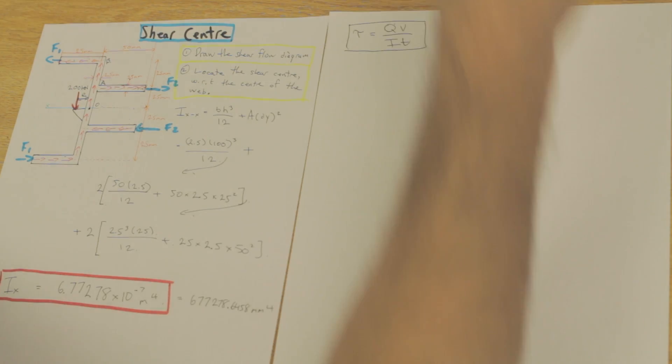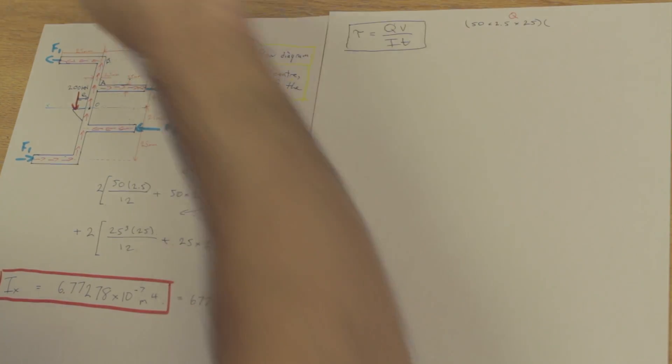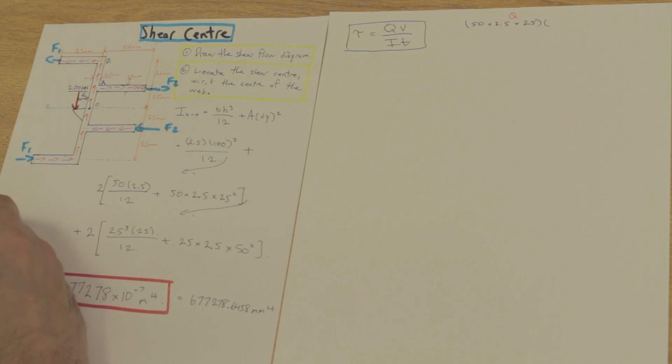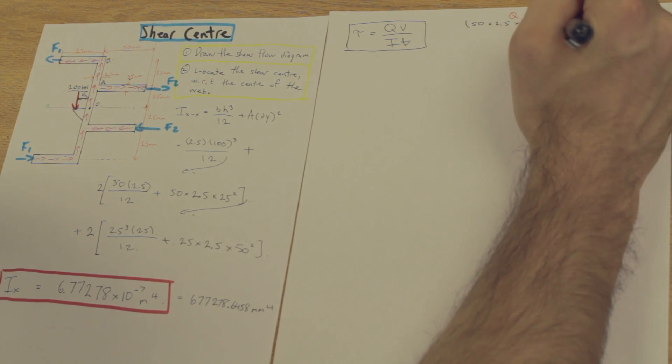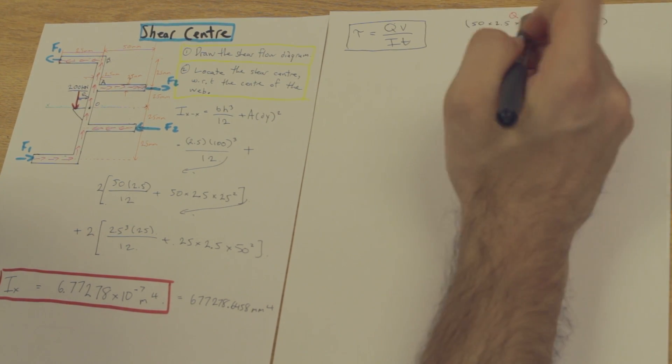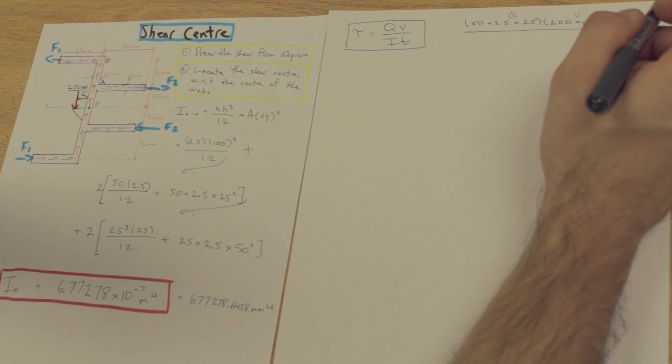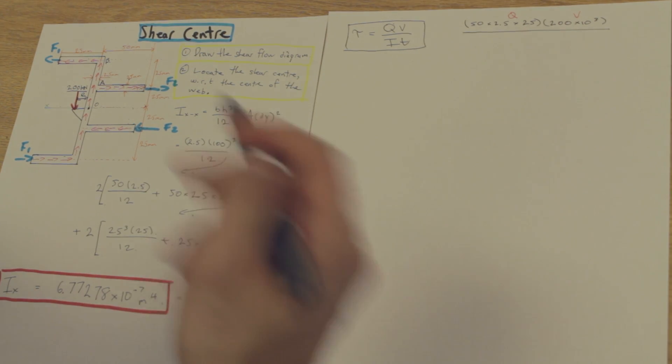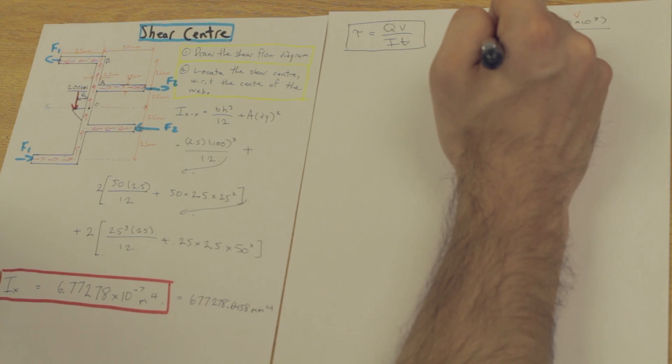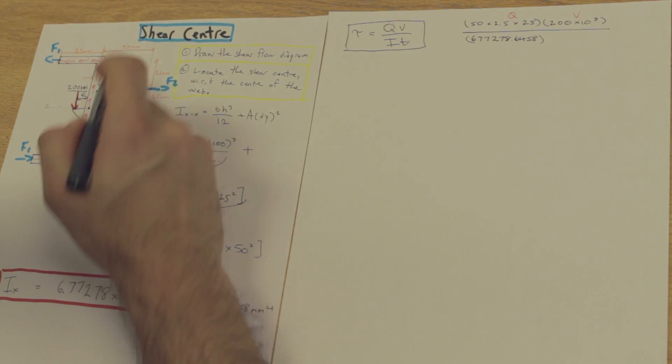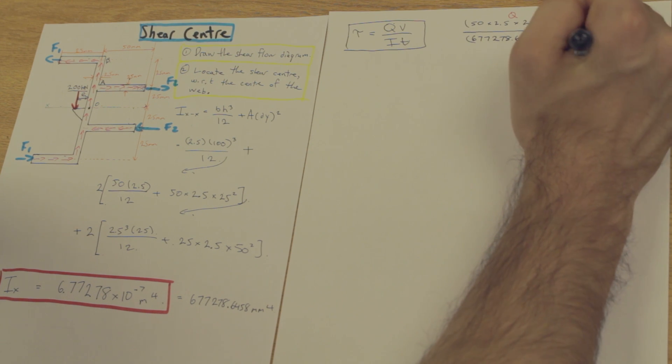So, the V is going to be the shear force acting on the cross-section, and that's given to us, and that's 200 kilonewtons. Let's convert that to newtons. That's going to be our V. And that's all divided by our I that we found earlier, which was 6,777,000 millimeters to the fourth. Finally, we have the thickness, and the thickness that we're concerned with is this thickness here, which is 2.5 millimeters.